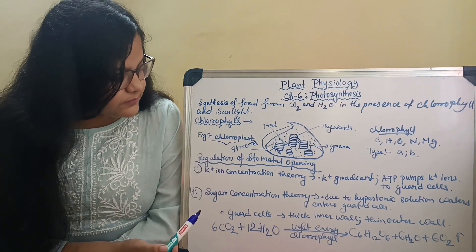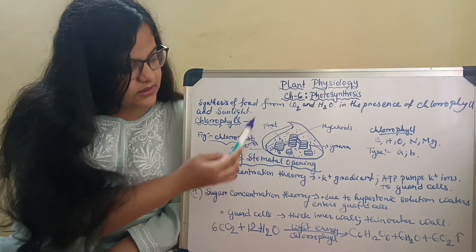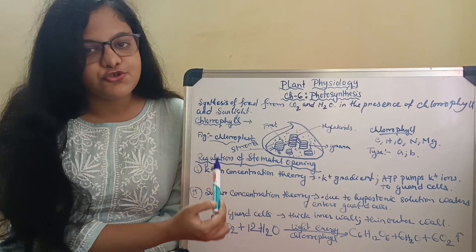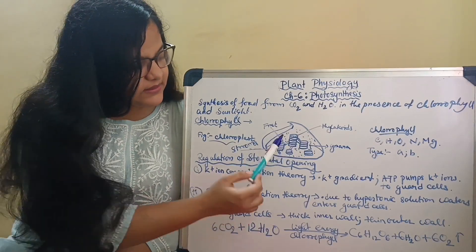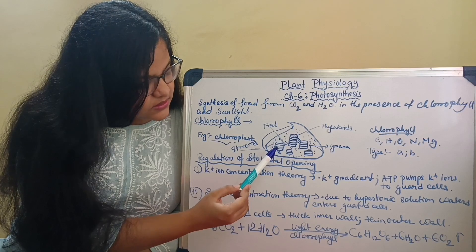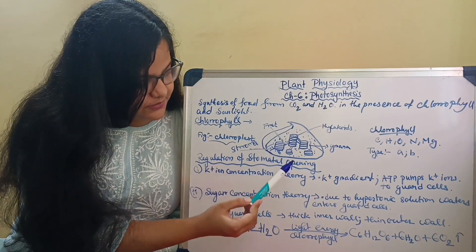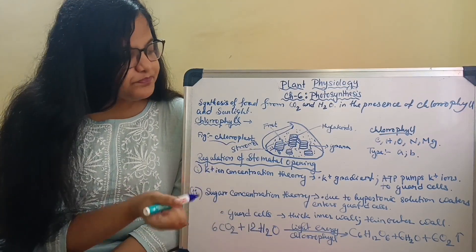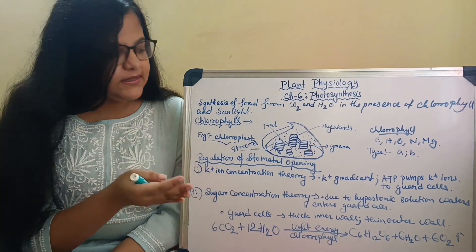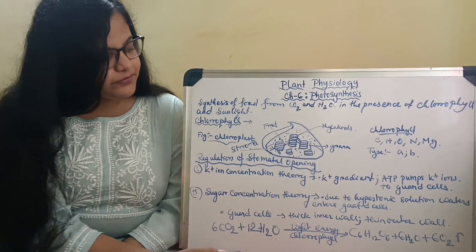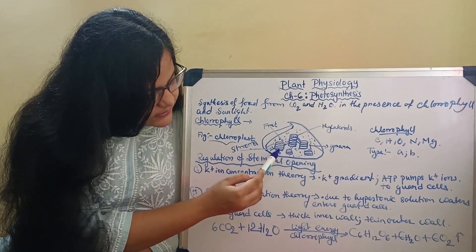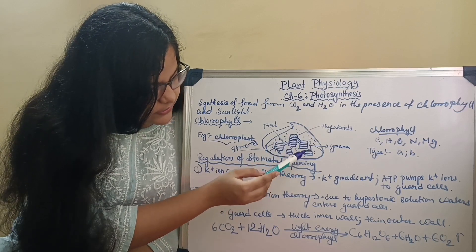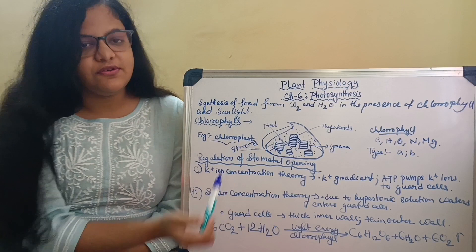Chloroplast first contains a gel-like semi-liquid substance inside it which is known as the stroma. Then it contains some disc-like shapes called the thylakoids. These thylakoids stacked together in a pile are known as grana. As you can see here there are some connecting bridges between these thylakoids — these are known as the fret.